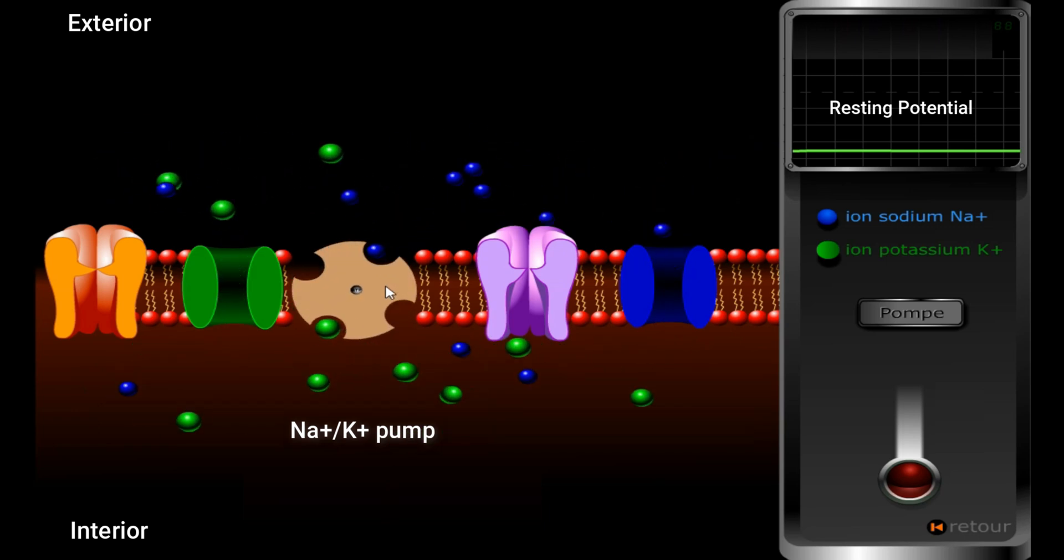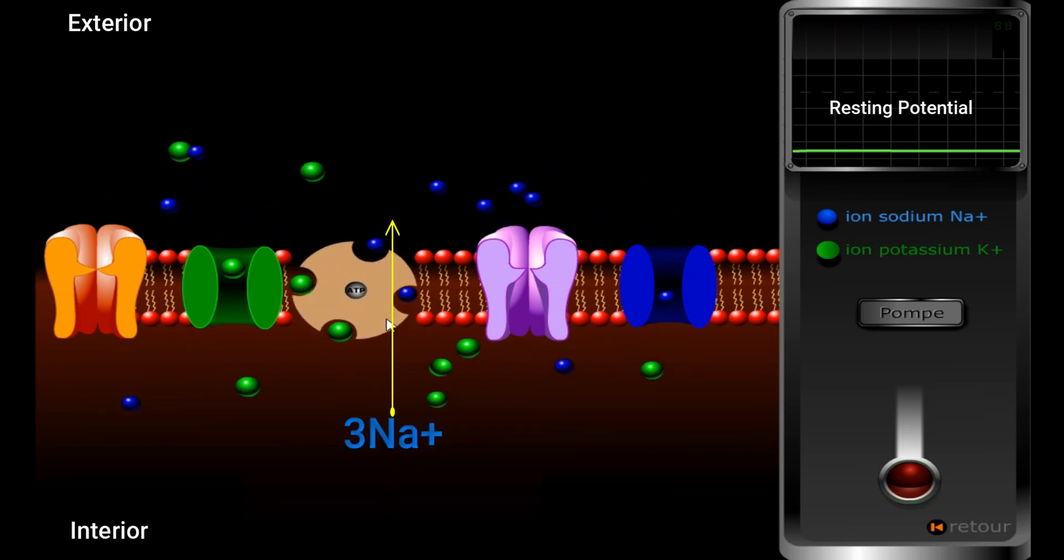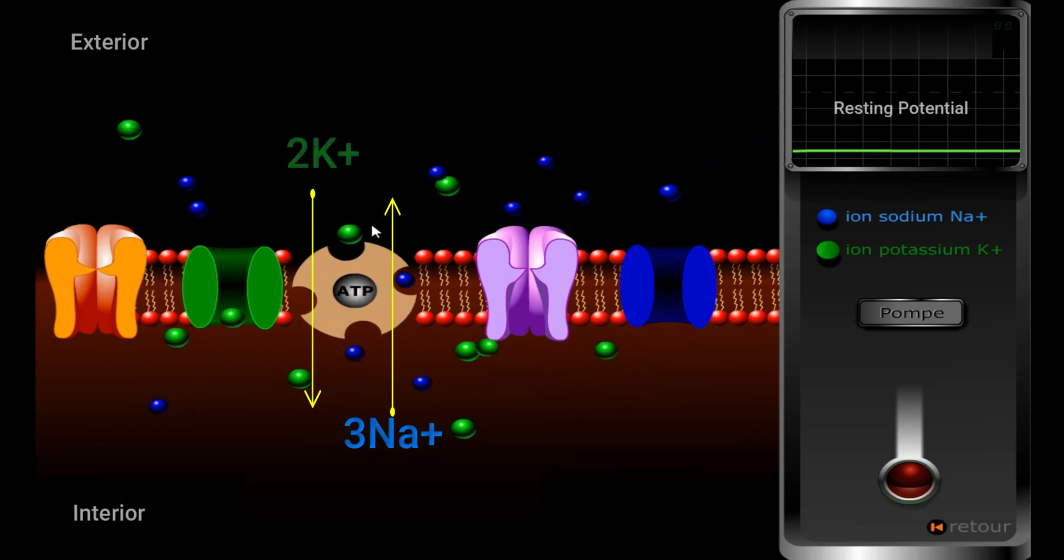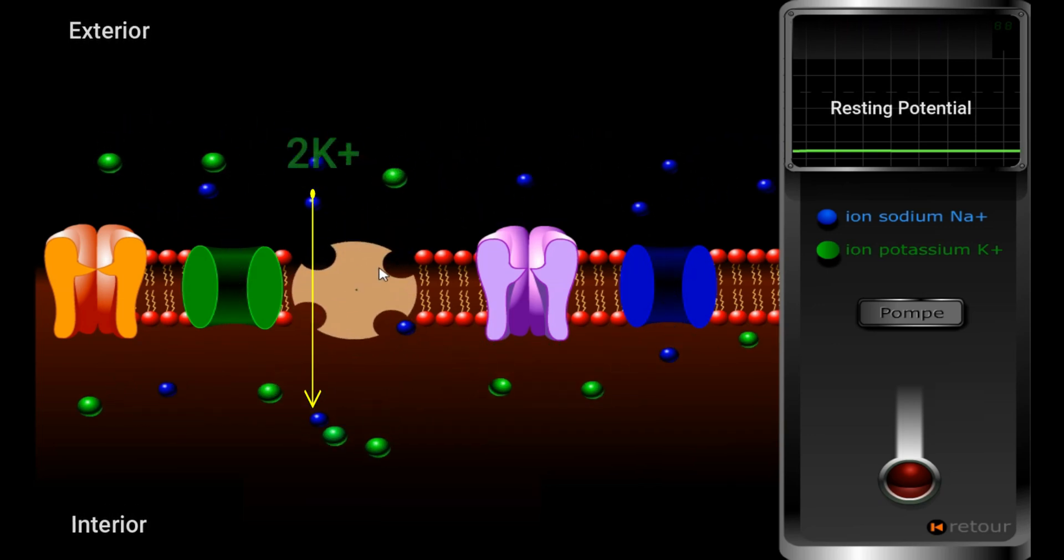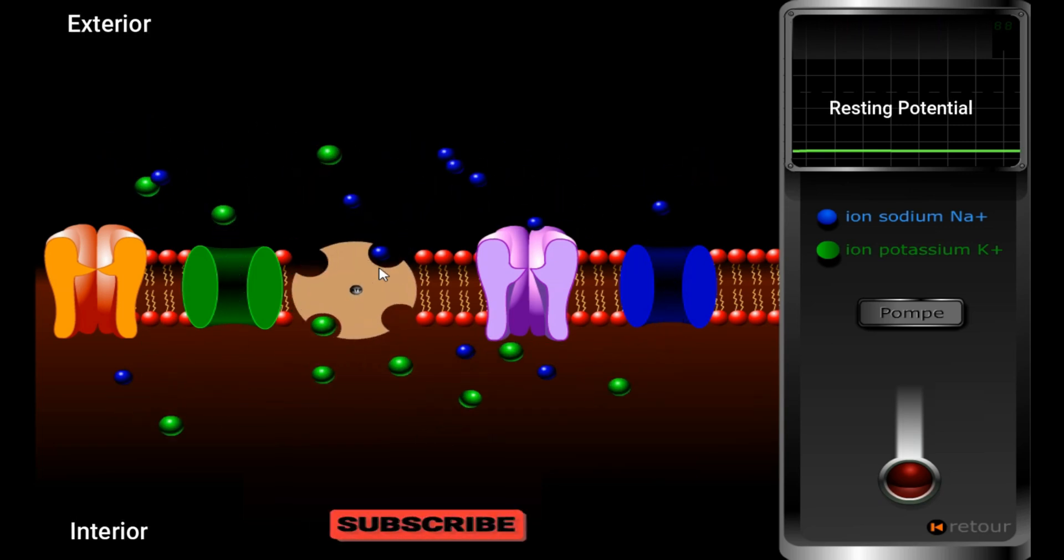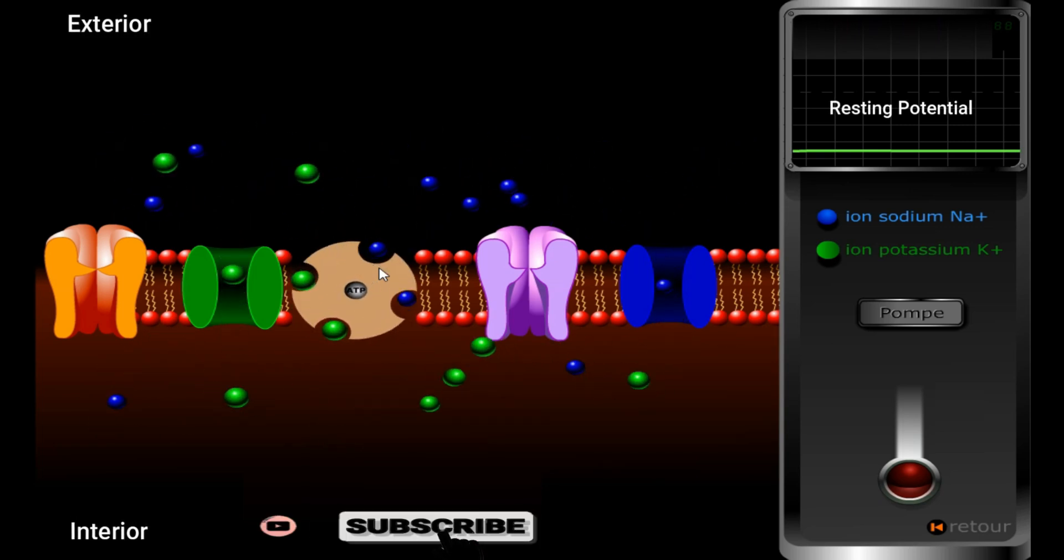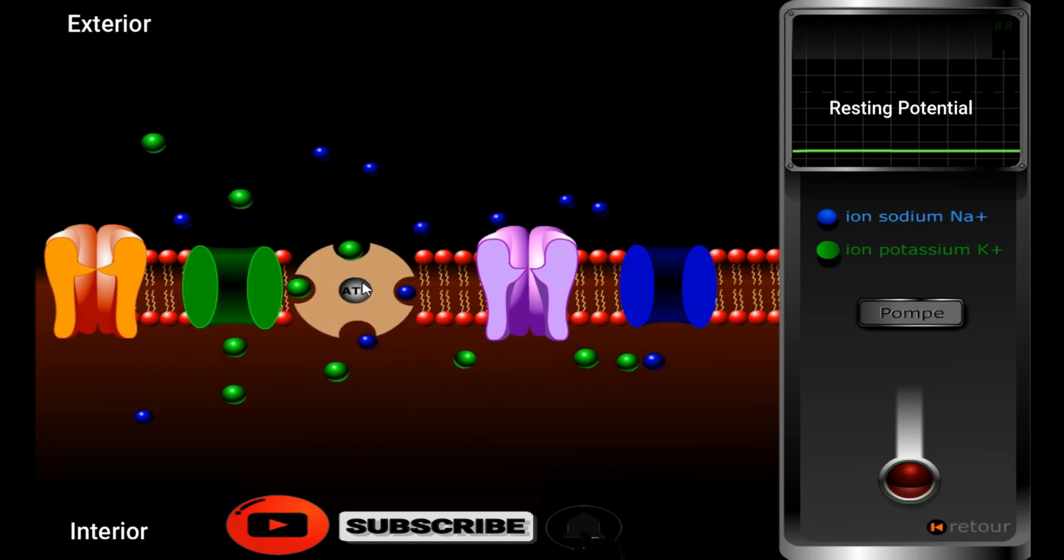As you see, Na+ ions are exported outside by this pump while K+ ions are imported inside. This leads to the consumption of energy in the form of ATP. Some references mention that the Na+/K+ pump consumes 70% of energy in the cell.